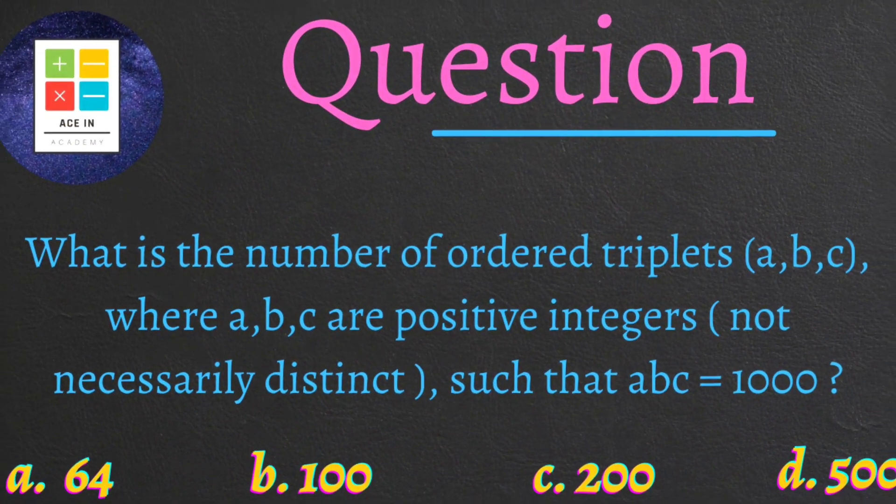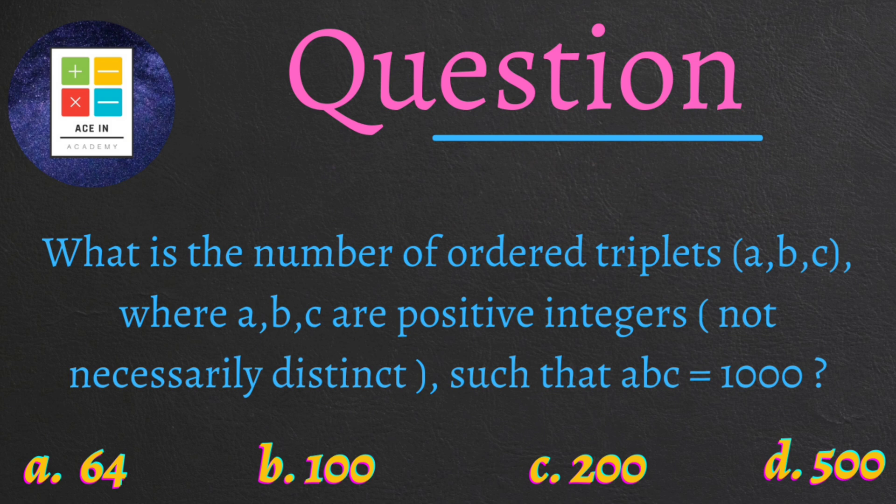The question is: what is the number of ordered triplets (A, B, C) where A, B, C are positive integers, not necessarily distinct, such that ABC equals 1000?